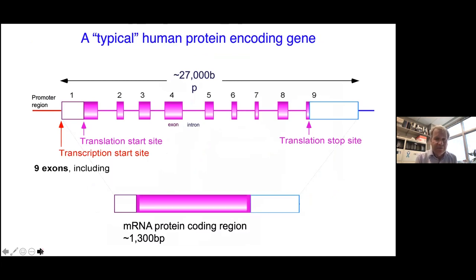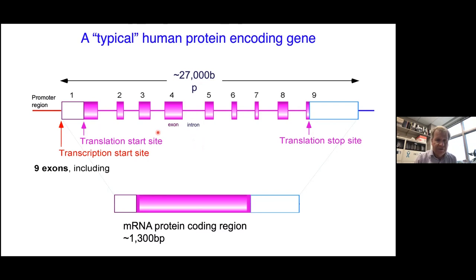A typical gene has about 27,000 base pairs. It's made up of coding pieces that are incorporated into the messenger RNA and intronic regions that are removed. We're especially interested in variants within the coding regions and at the borders between coding and intronic regions, as these are the ones that often cause genetic diseases.